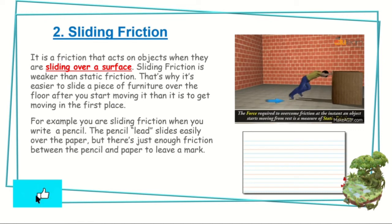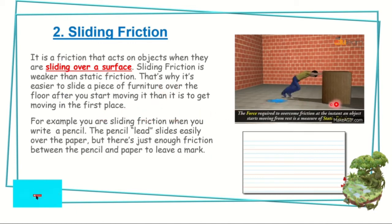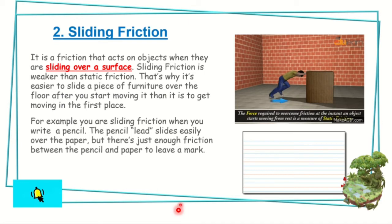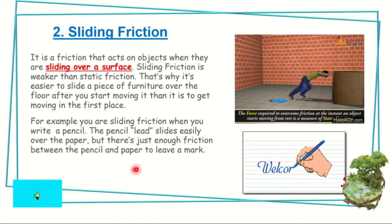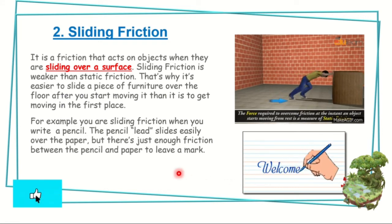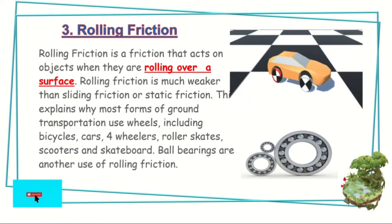The next type is sliding friction. It is a friction that acts on objects when they are sliding over a surface. Sliding friction is weaker than static friction. That's why it is easier to slide a piece of furniture over the floor once it is already moving than to get it moving in the first place. For example, when you write with a pencil, the pencil lead slides easily over the paper — that is sliding friction.